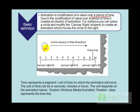For example, let's say you have a circle. If you modify the canvas.right value over a period of time, you will feel an illusion that the circle is moving in a right direction.